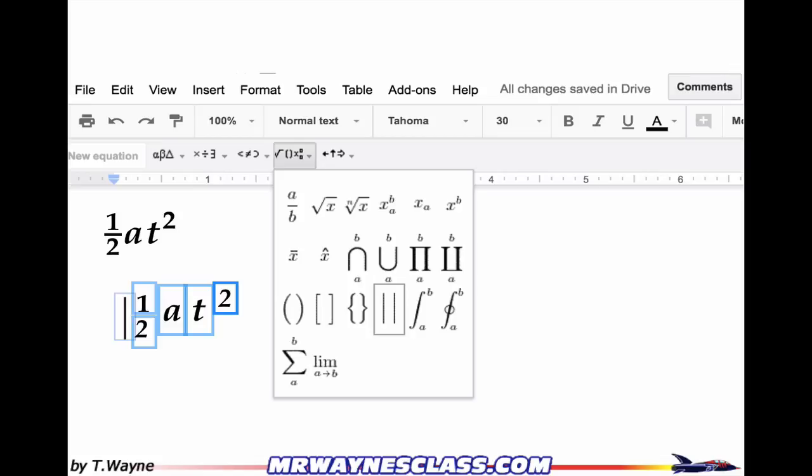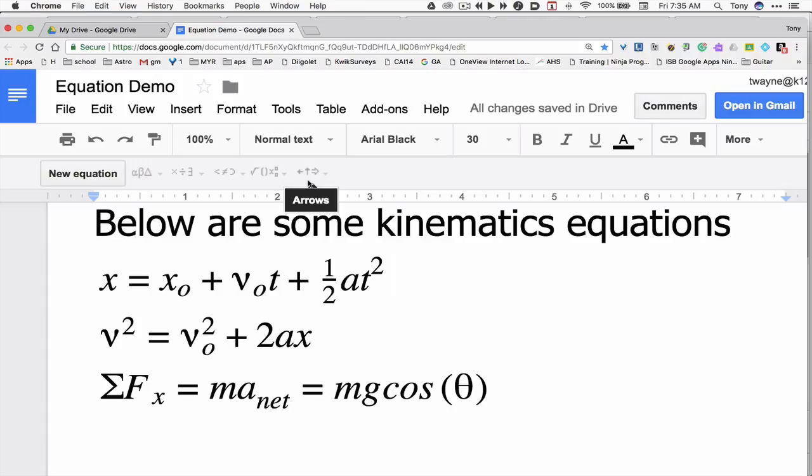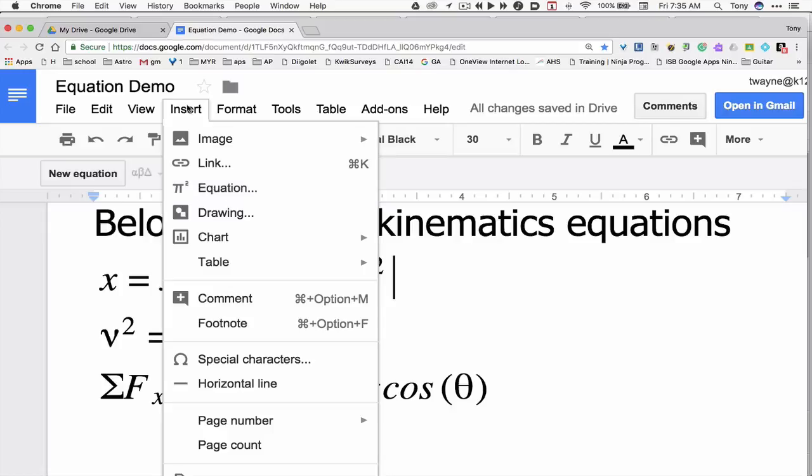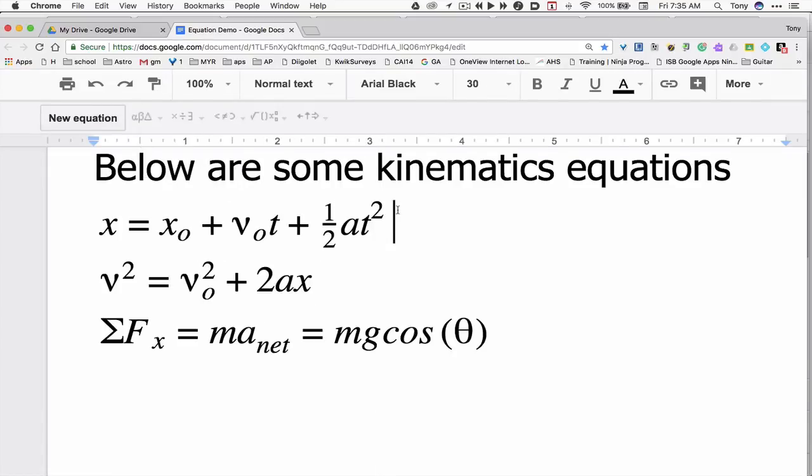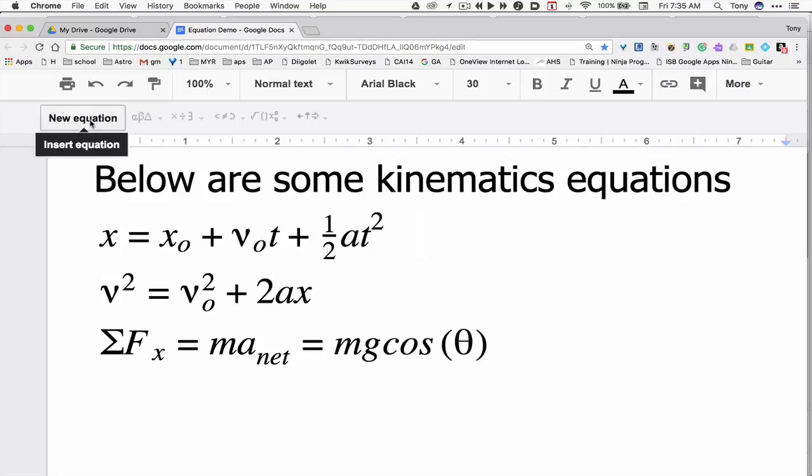So let's take a look at this and what it looks like when I actually do it. So here I am with some kinematics equations. I went to insert and down to equation to actually get these menus and create this bar. I'm going to put some space here because it's right here. And I'm going to type new equation. Now my screen is magnified so you can see things a little bit easier.